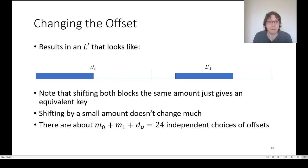First thing we can do is we change the offset as in the diagram here. Note that if you shift both blocks, this doesn't really do anything for us. In fact, we're covering exactly the same keys. And even if you shift one of the blocks by a small amount, that doesn't help you all that much because usually if you move it a little bit, you're not going to get anything you didn't get already. But we still think that you can do about 24 different offsets without too much overlap.